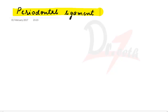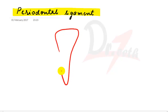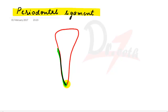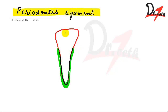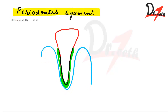Today we are going to study about the periodontal ligament. The periodontal ligament surrounds the root of the tooth and connects the tooth with the alveolar bone, filling up the space between the alveolar bone and the tooth.